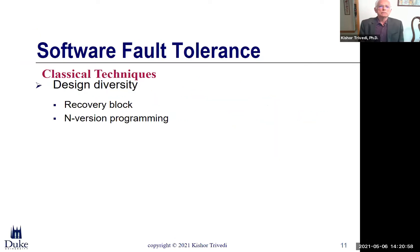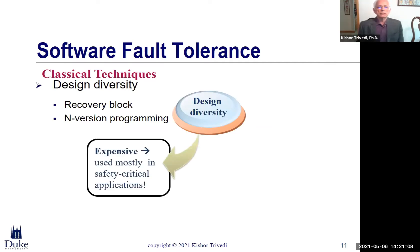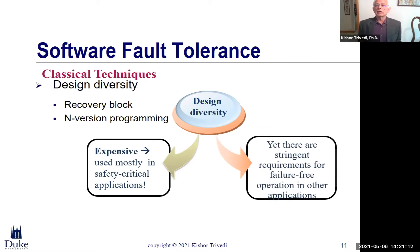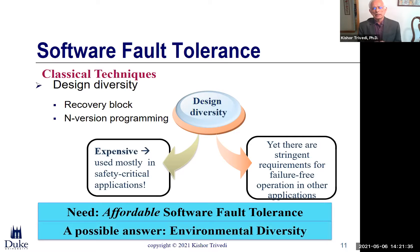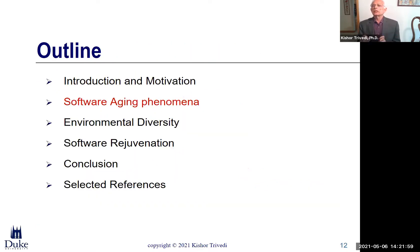These classical techniques based on design diversity — specifically recovery block and N-version programming — are expensive and used mostly in safety-critical applications. But we do have stringent requirements of failure-free operation in other applications such as enterprise systems. What is needed then is affordable software fault tolerance, not the expensive kind. The possible answer is what we have been calling environmental diversity, as opposed to design diversity, and one aspect of that is what I'm talking about today. To explain environmental diversity, I first need to introduce the notion of software aging.